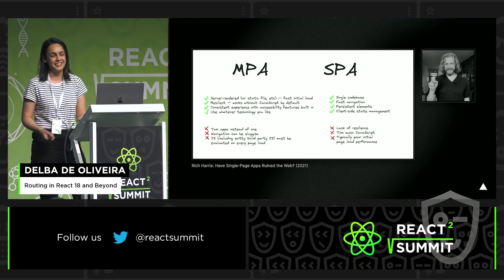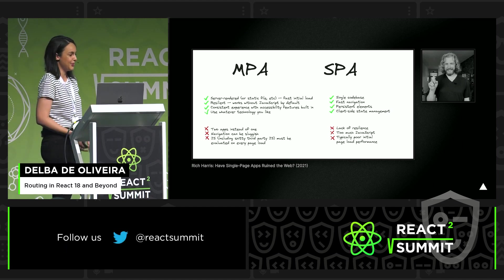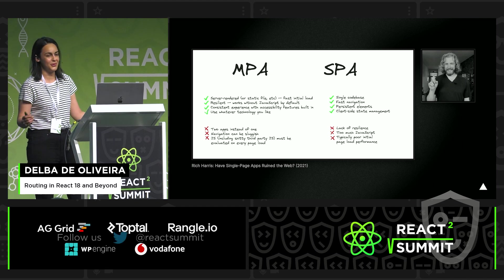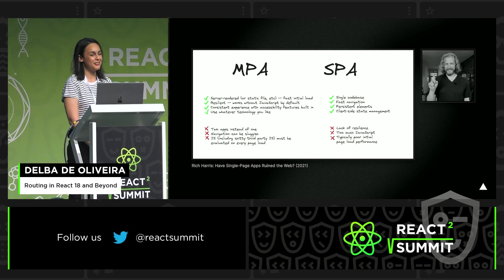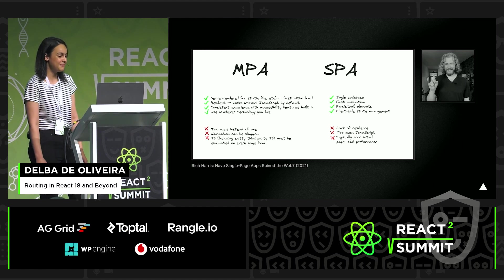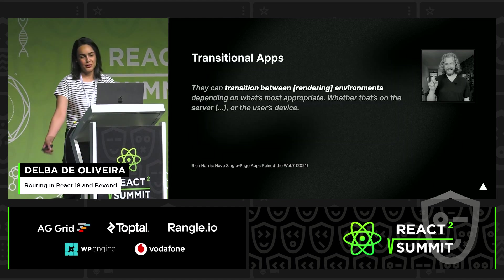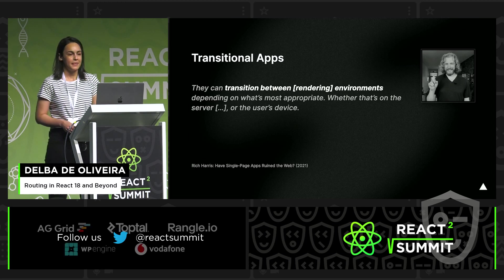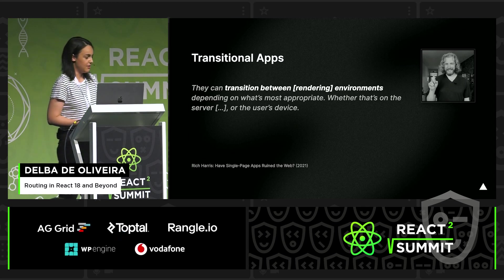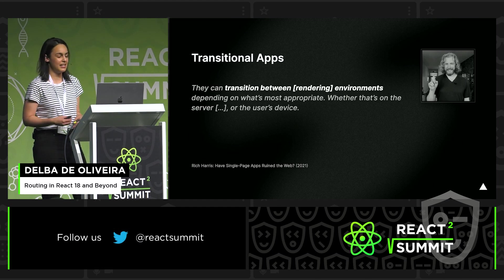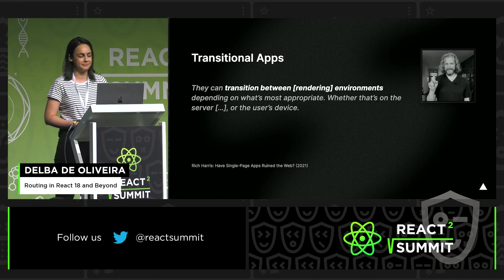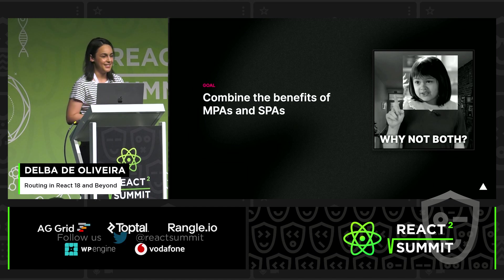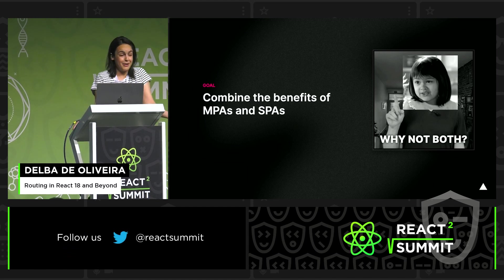Last year, Rich Harris, the creator of Svelte, gave an amazing talk on the whole MPA versus SPA debate, where he discussed some of the pros and cons of each. One takeaway I want you to remember is that he recognized there's an emerging pattern in our industry where applications are transitioning between different environments — client or server — and he called those types of applications transitional apps. Transitional apps try to combine the benefits of both the client and the server — because why not both?